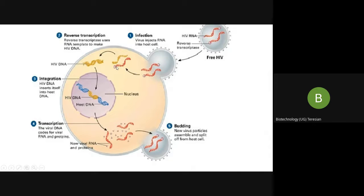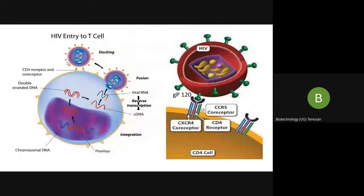These viruses are very smart — they carry along with them what is known as reverse transcriptase enzyme. This enzyme uses the RNA template to make HIV DNA. First, a single-stranded DNA is formed, and then it is converted into double-stranded DNA. The viral RNA is converted by reverse transcriptase into single-stranded DNA, then into double-stranded DNA.